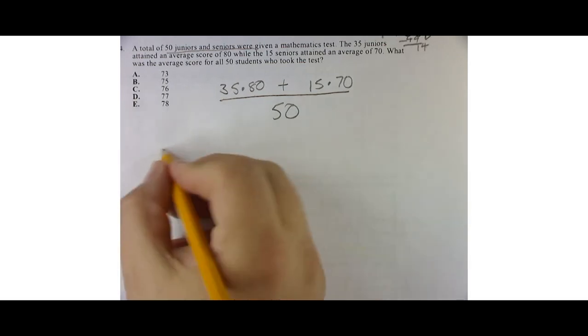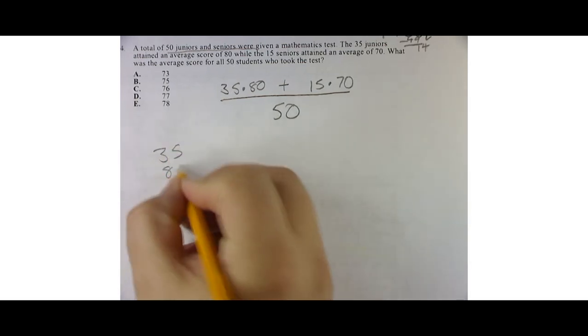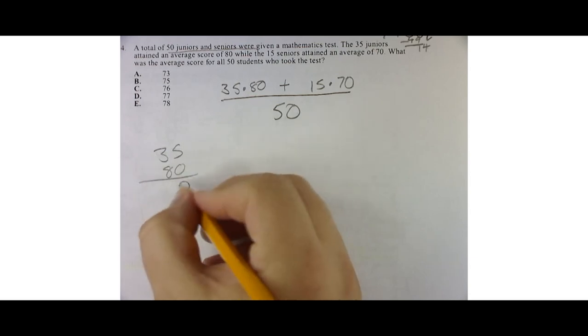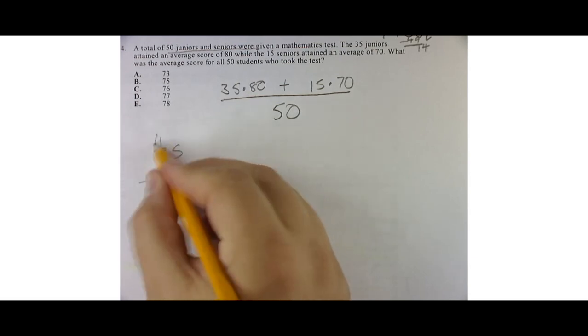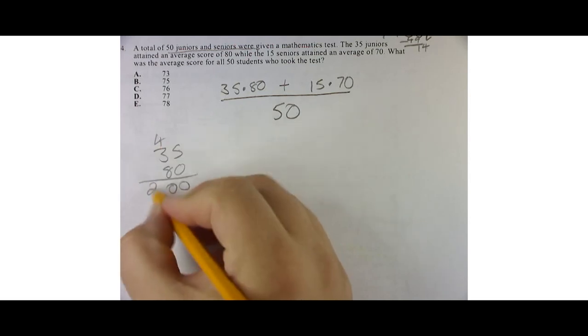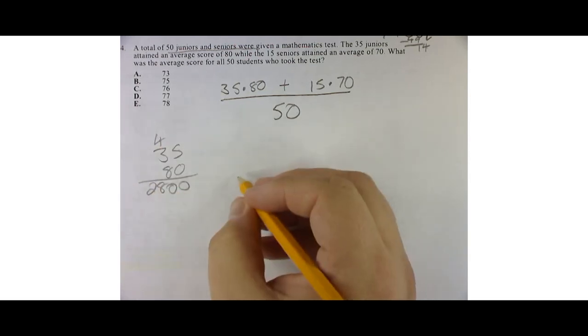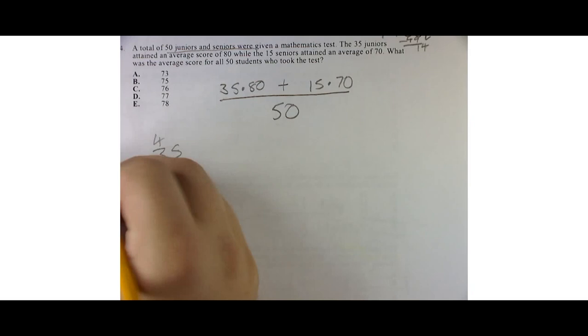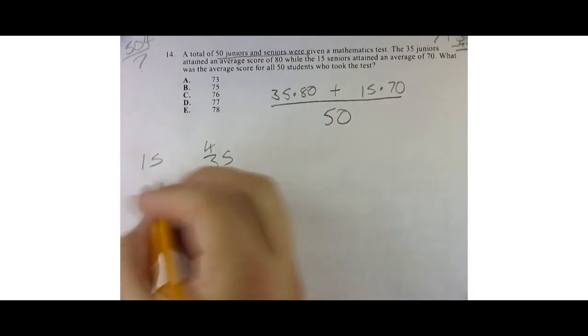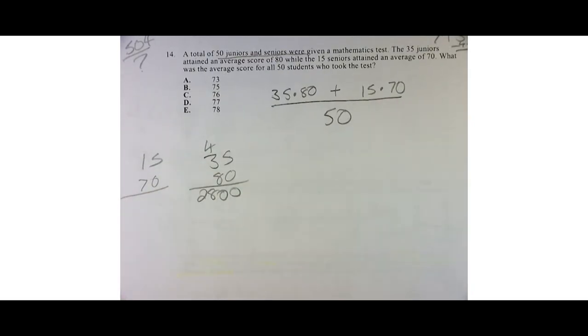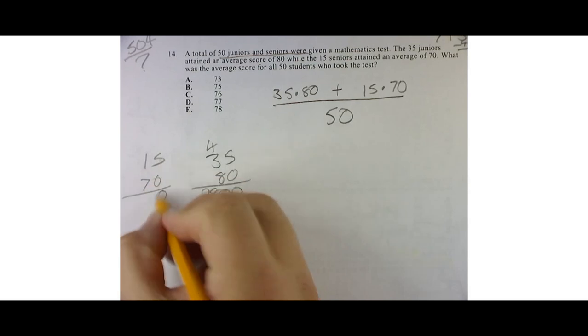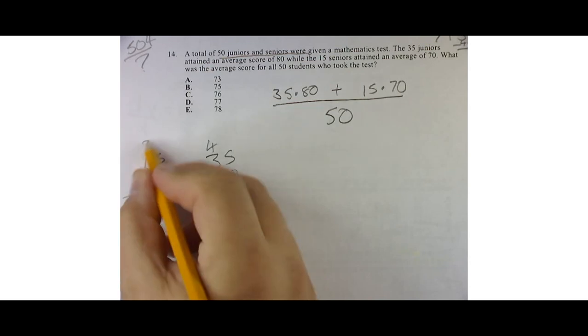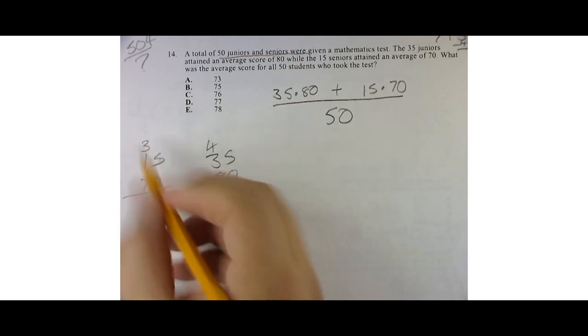So I'm going to write this over to the side. 35 times 80. I multiply everything by zero. And then 8 times this is 40. 2800 for that one. Then for this one over here, if I say 15 times 70, I'm going to multiply everything by zero. Now I'm in the tens place. 7 times 5 is 35. 7 times 1 is 7, plus 3 is 10.